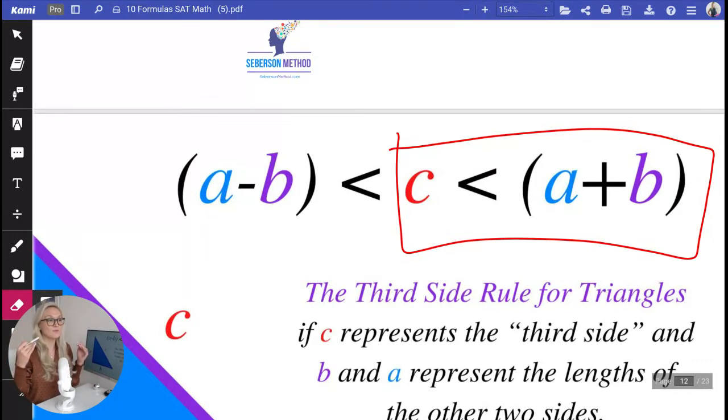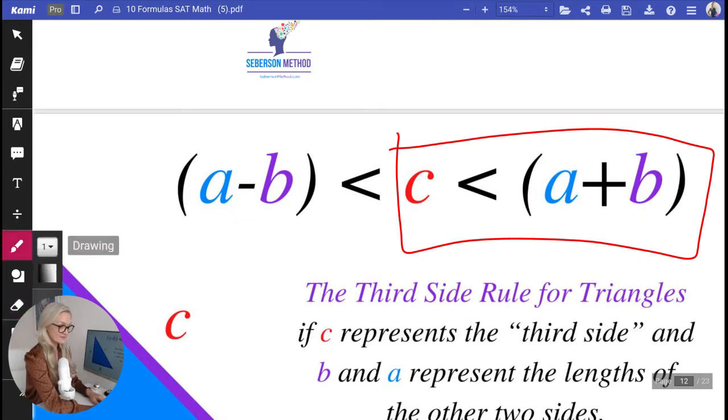How long could this side, the third side not be? So if one side is 20, another one is 8, the maximum length of that side is 27.5 or 27.9. It cannot be 28 or longer. But what about how short can it be? What is the shortest it could possibly be? So that's why we have this part of the rule.